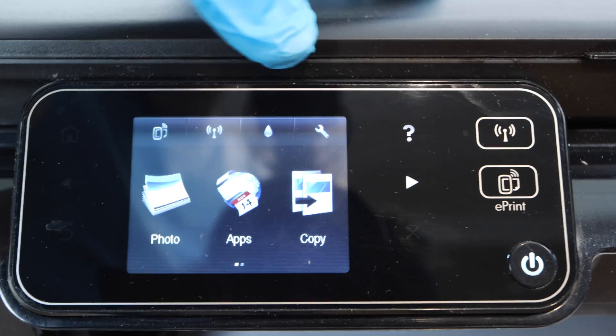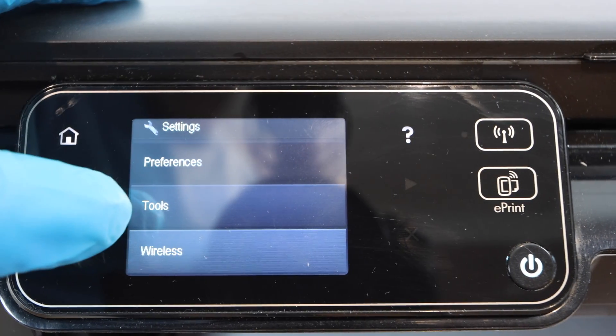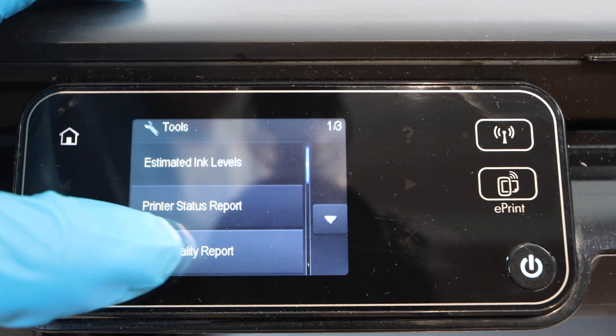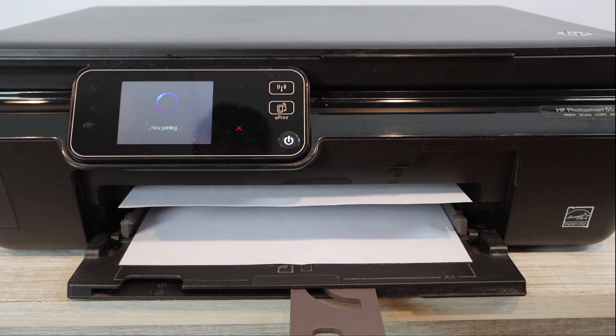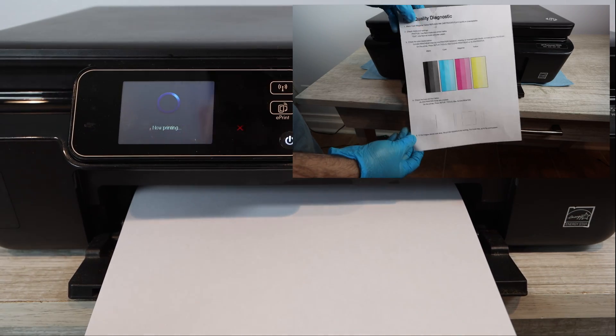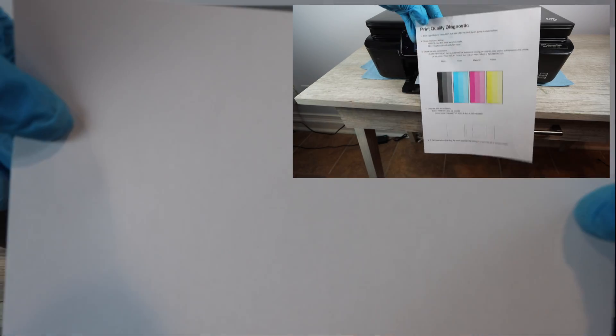Alright, so the very first thing we need to do is go to settings. That's the wrench at the top right corner, click on tools, and then we're going to print off a print quality report. This is very important because this is going to show us is it printing blank pages? Is the printer not printing a certain color? So I'm going to put up on the screen what this report should look like and what it actually ended up coming out to be, which was totally blank on this printer.